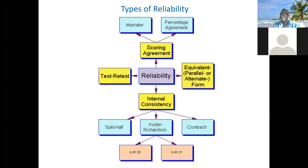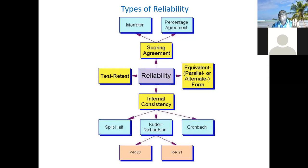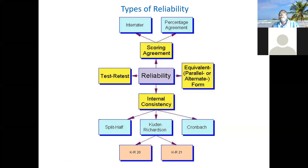I also presented the different approaches — now called different types of reliability. They are approaches because different types are applicable in different settings. The nature of your instrument determines the type of reliability you can carry out to ensure that the data coming from that method is consistent. You can see four different types — those are the yellow boxes in the diagram.